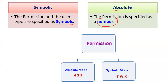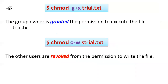In absolute mode, permission is mentioned in the form of numbers. Read is 4, write is 2, execute is 1. So in absolute mode: read permission is 4, write permission is 2, execute permission is 1. In symbolic mode characters and symbols are used, while in absolute mode numbers are used. Hope you understand the two different types of mode.